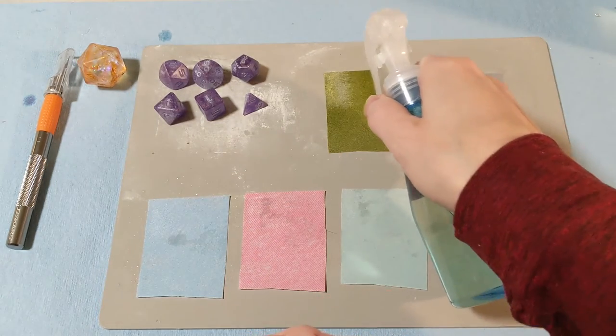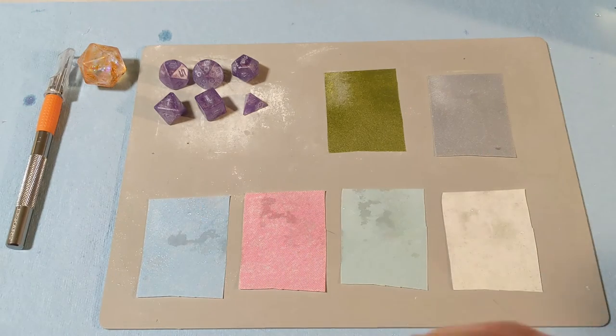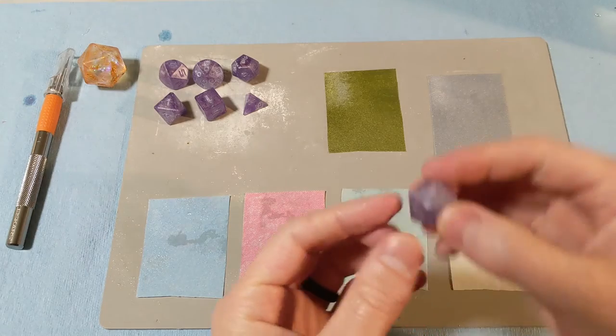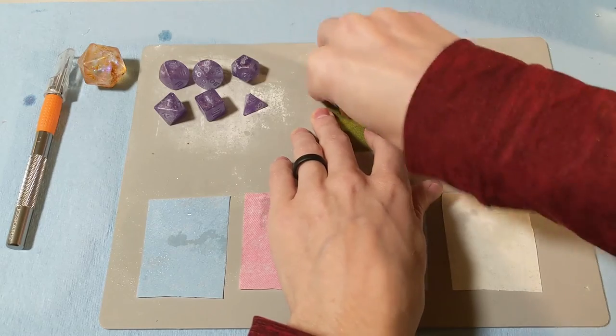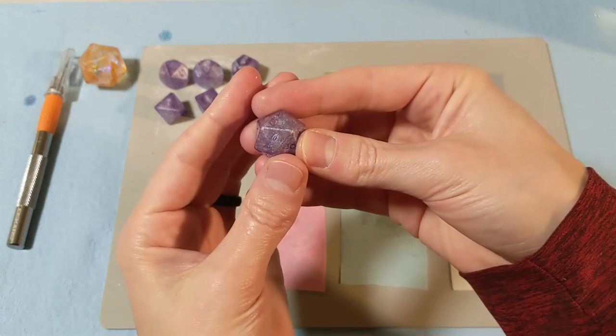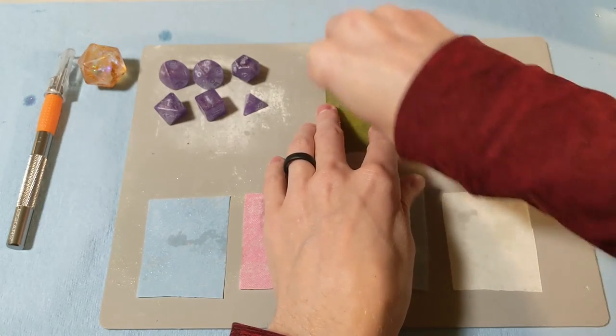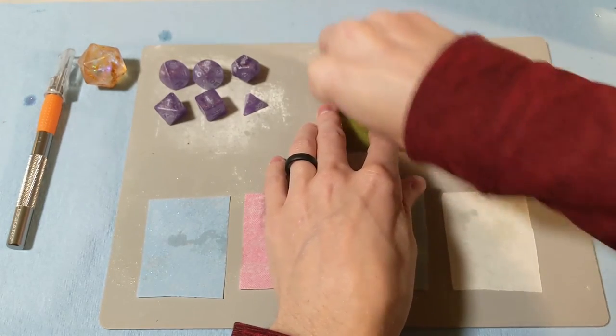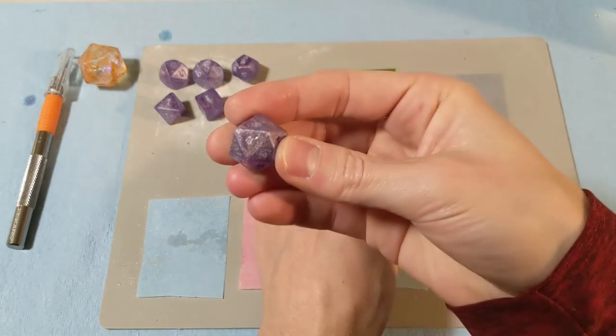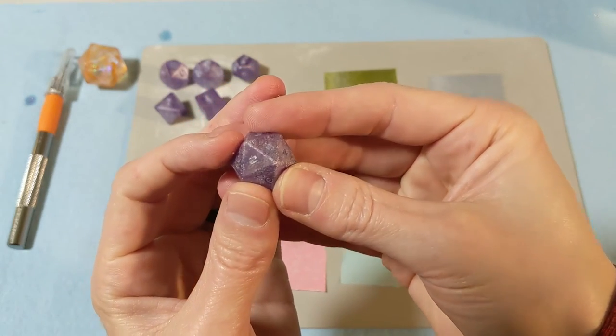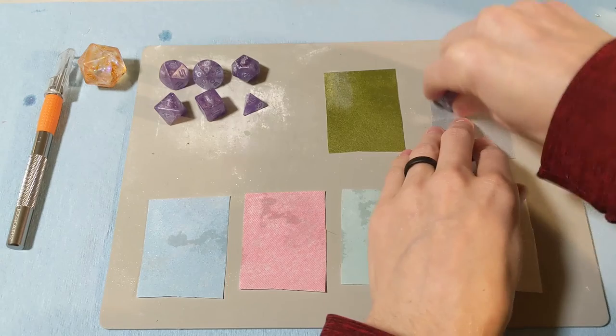That could also just be the resin that's being pushed into the number as you sand. So after I get done sanding the faces, I will scrub them out with some water and a little manicure brush to make sure that all the excess resin is out of there and it's just the powder that is showing. This first side takes more sanding because I got to get rid of the sprue. It's also a little bit harder to tell on these dice just because of that really cool purple color shift.